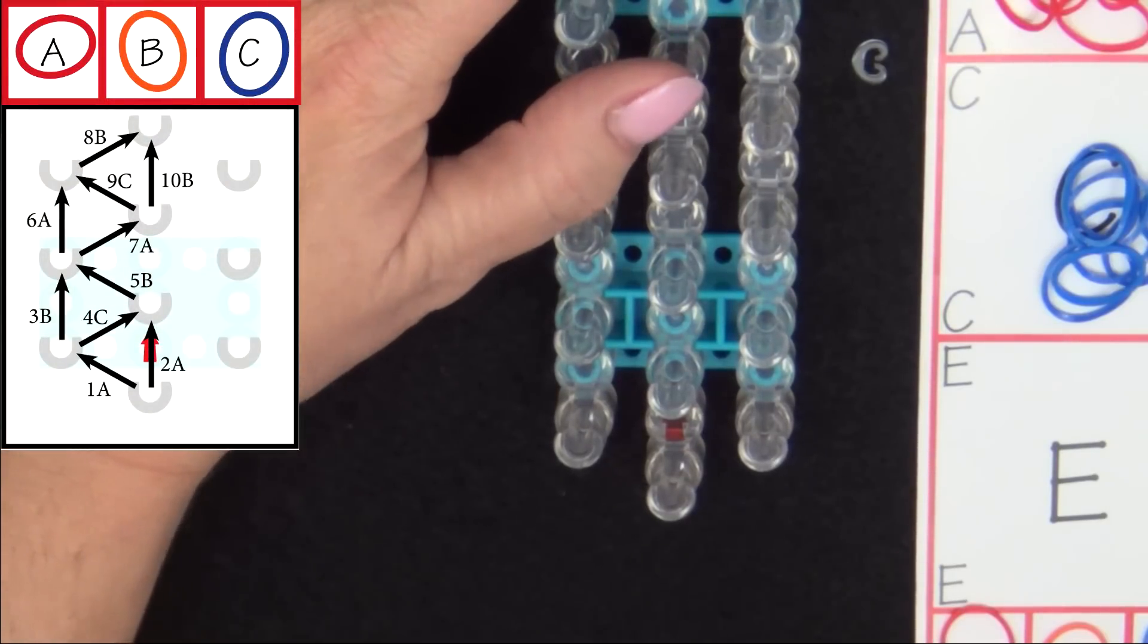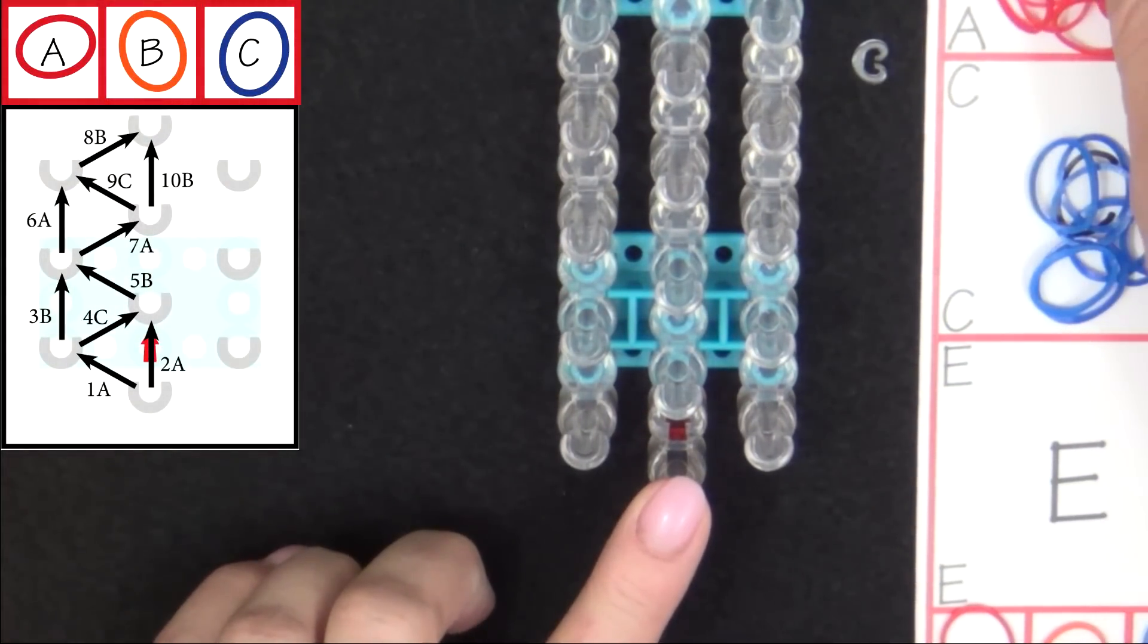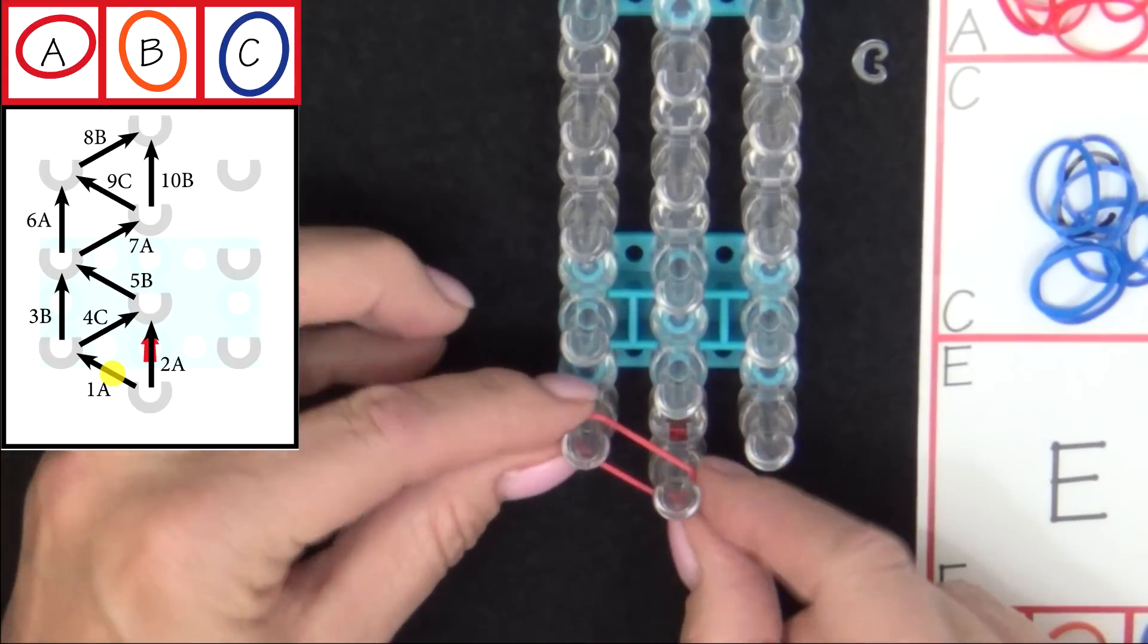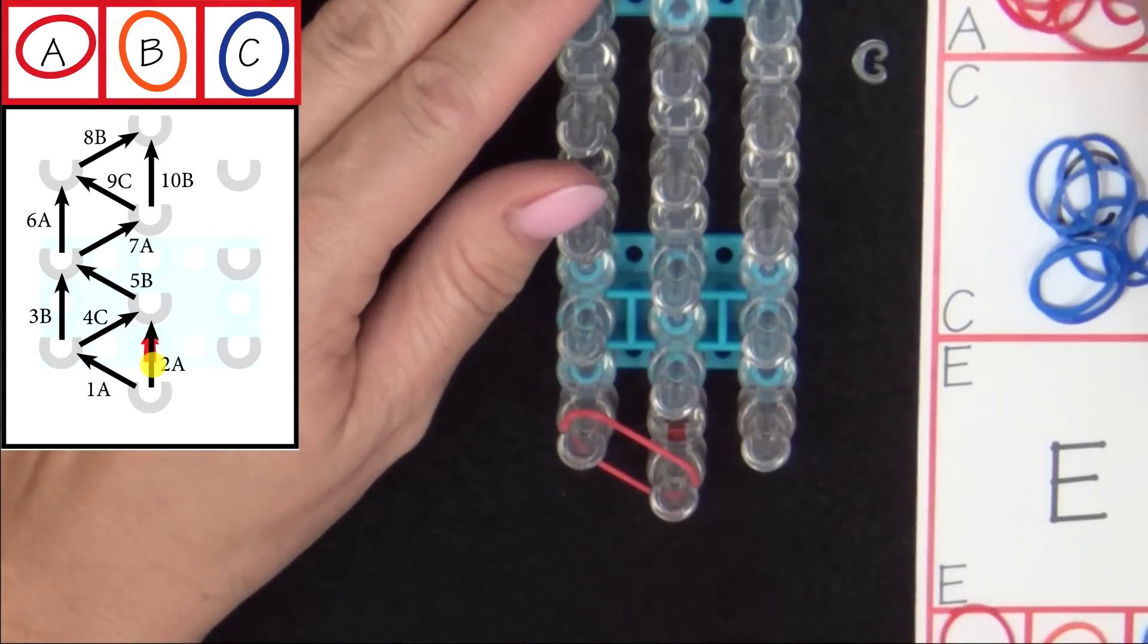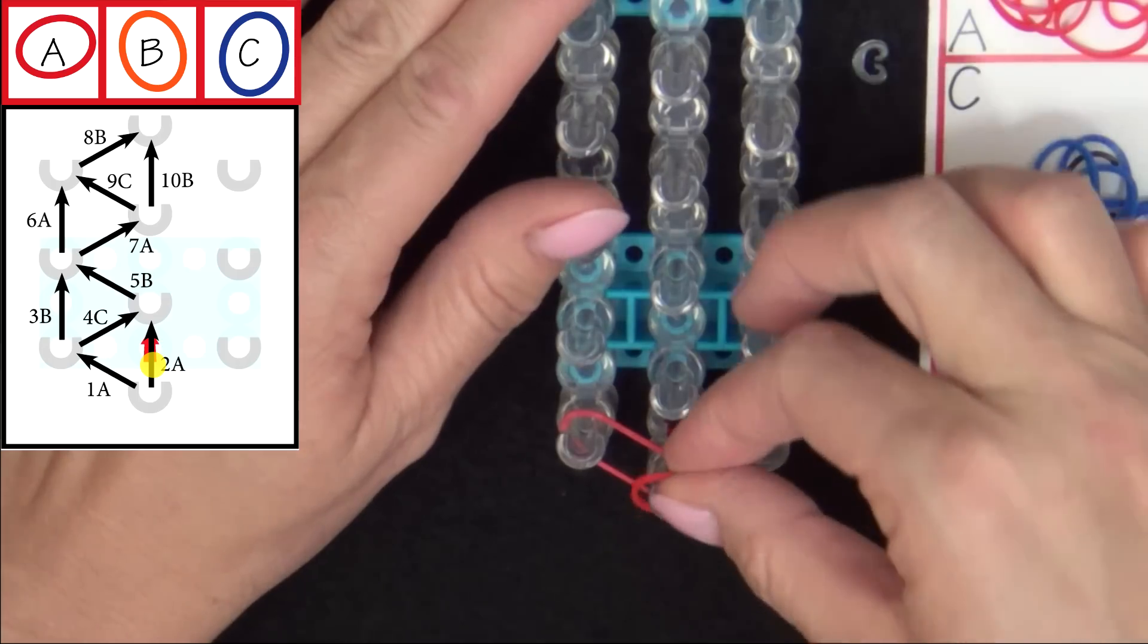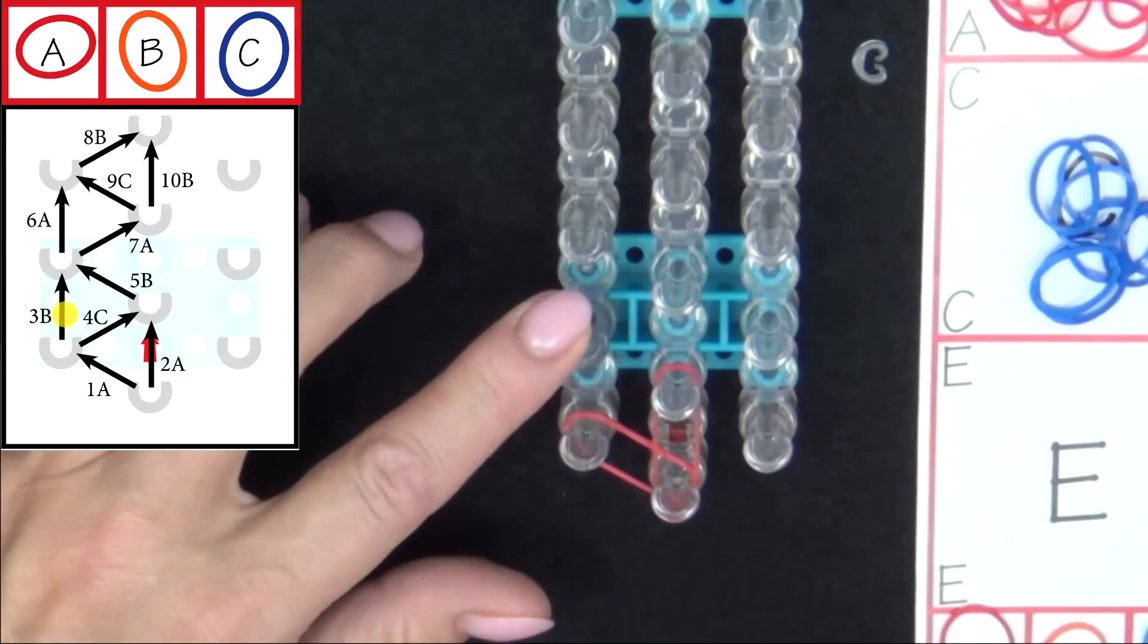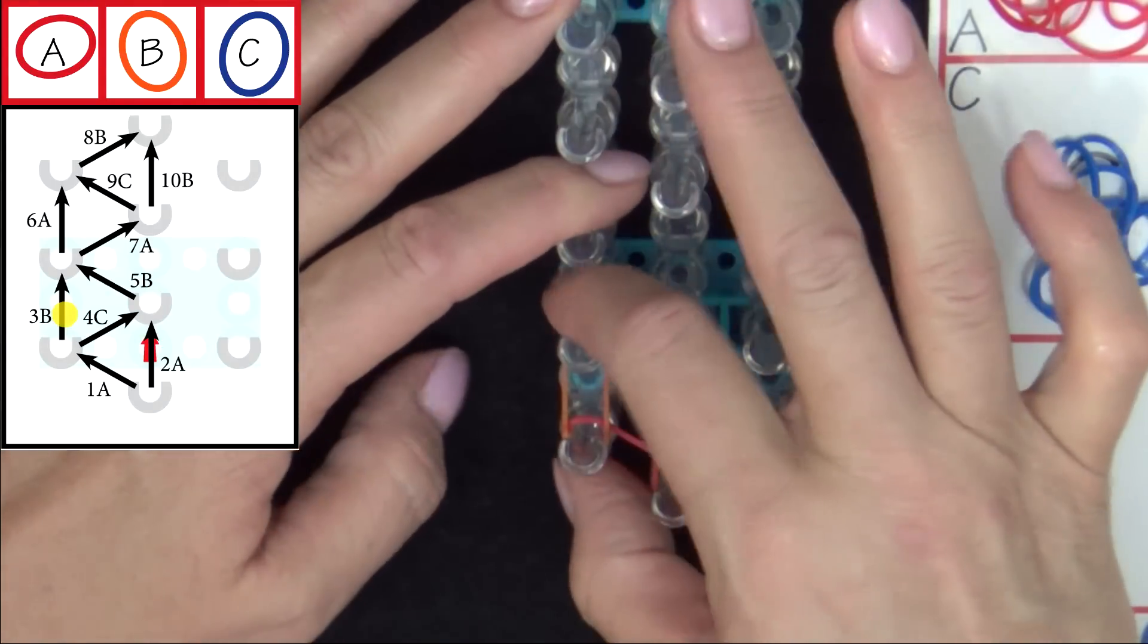Follow the diagram on your screen as we place these bands. We'll start from the center pin and place 1A. Then we'll place 2A from the middle pin forward. 3B. Push those down.